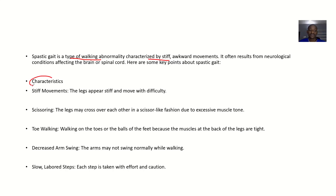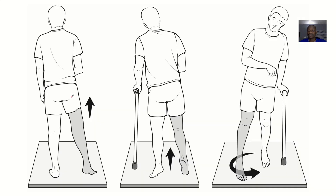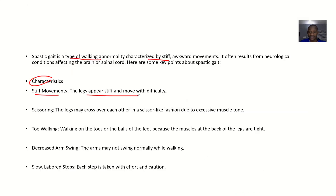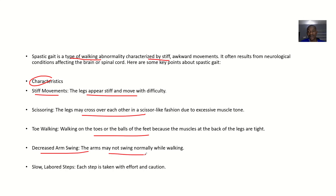Characteristics include stiff movement — you can see how the person moves, raising their leg and swinging it in a semi-circular arc. The legs appear stiff and move with difficulty. Scissoring may occur where the legs cross each other in a scissors-like fashion due to excessive muscle tone. Toe walking — walking on the toes or balls of the feet — occurs because the muscles at the back of the feet are tight. Arm swinging is decreased, and each step is taken with effort and caution.